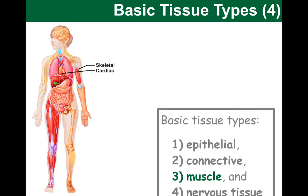We also have cardiac muscle tissue, which is found only in the heart. It is characterized by a rhythmic contraction, which enables our heart to pump blood around the body. Then we have smooth muscle, which typically lines the walls of hollow organs. Without the smooth muscle layers of the stomach, it would be just a sac unable to mix food or push it onwards to the rest of the digestive system. We also find smooth muscle around blood vessels to control the vessel diameter.